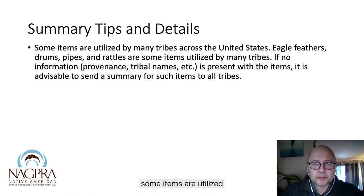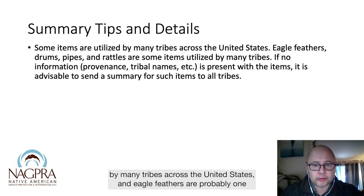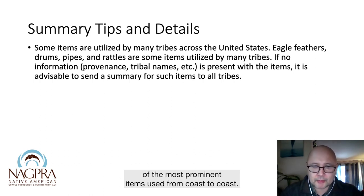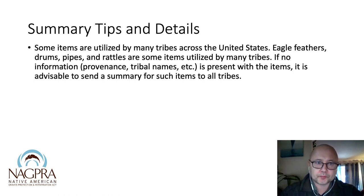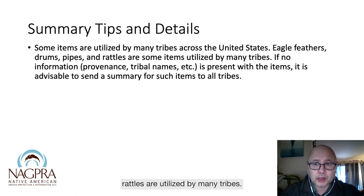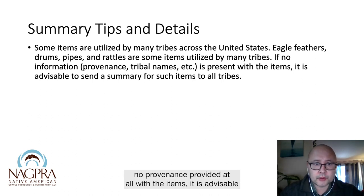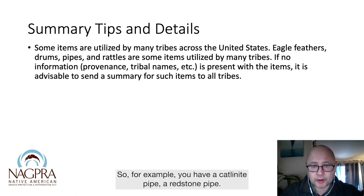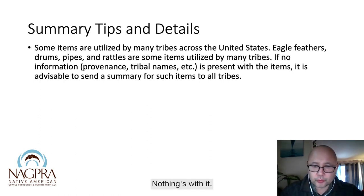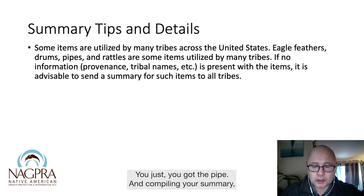Some items are utilized by many tribes across the United States. Eagle feathers are probably one of the most prominent items used from coast to coast. Drums, pipes, and rattles are utilized by many tribes. If no provenience — no tribal name — is provided at all with the items, it is advisable to send a summary to all tribes. For example, if you have a catlinite pipe, a red stone pipe, with nothing with it — no name, no provenience, no tribe — it's obviously a high priority sacred item. I would send a summary to every tribe across the United States and cover your bases.